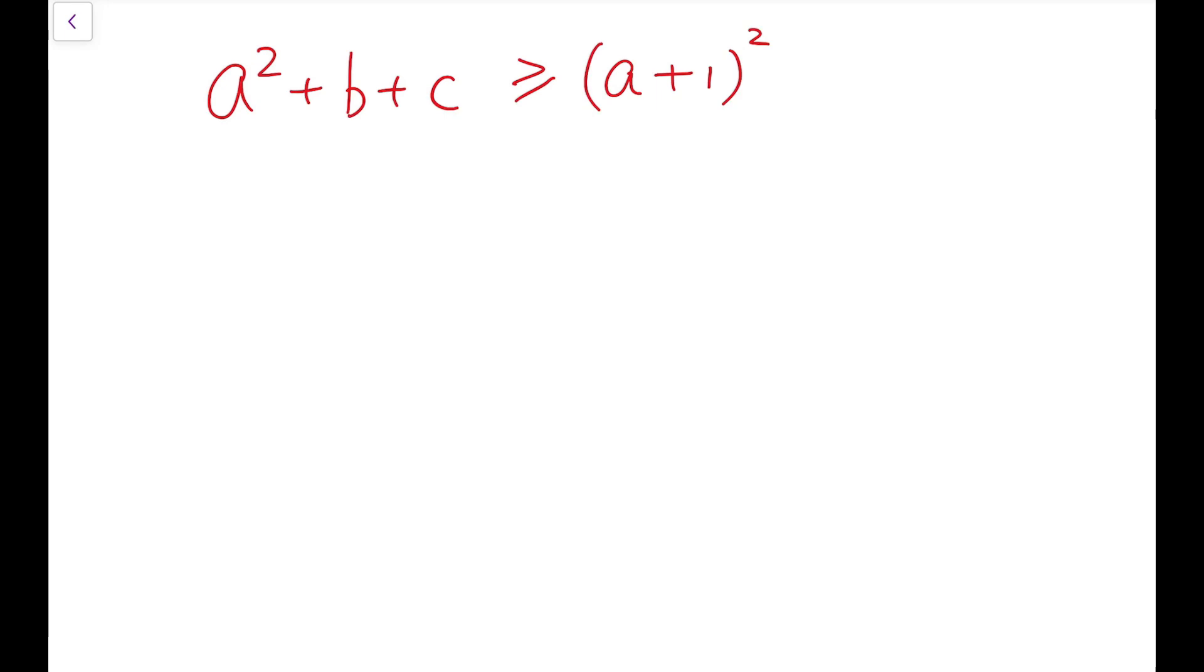So we have established three inequalities, and let's take a closer look at one of them. We have a squared plus b plus c to be greater than or equal to a plus 1 whole squared. Expand the right-hand side, and we have the same expression to be greater than or equal to a squared plus 2a plus 1. Remove the a squared on both sides, and we have an inequality, b plus c to be greater than or equal to 2a plus 1.